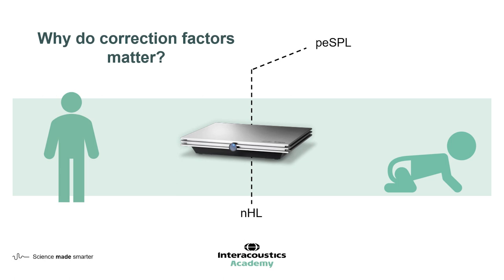Evoked potential systems should present stimuli levels in nHL. Historically there have been some unusual scales used, so it's important to check that nHL is the value presented by the system. We then apply a correction factor to get from nHL to EHL. This is as close to HL as we can get. We can't say that this is HL, because that is reserved for pure tone audiometry. Hence, in ABR we use EHL — estimated hearing level.